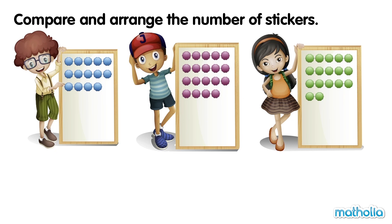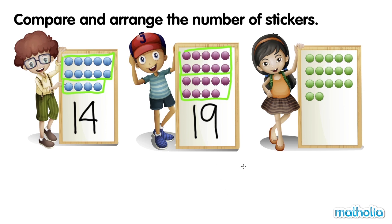Compare and Arrange the Number of Stickers. Dan has 10 and 4 stickers, so he has 14 stickers. Jack has 10 and 9 stickers, so Jack has 19 stickers. Lynn has 10 and 7 stickers, so Lynn has 17 stickers.